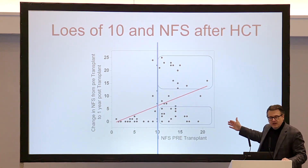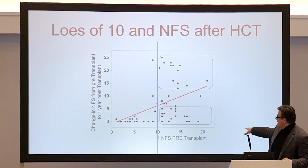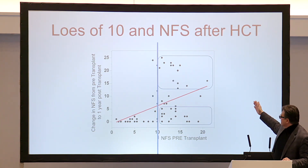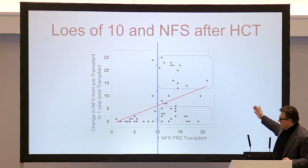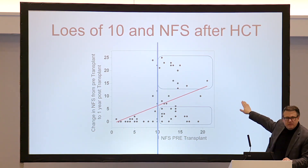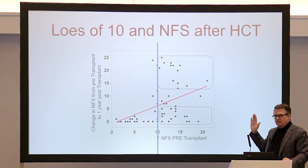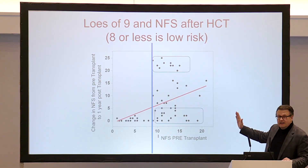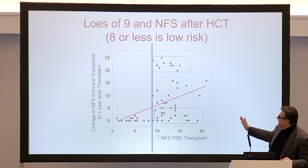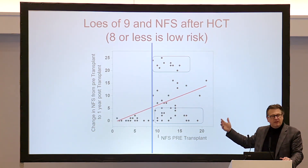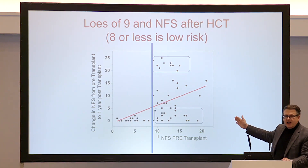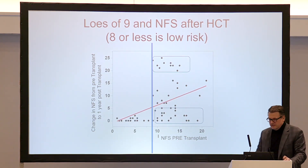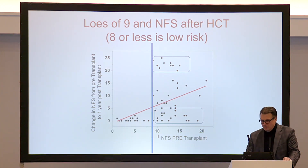This is the same graph again — the bottom axis should be MRI score, not NFS. Boys at a score of 10 and higher on the right have poor NFS outcomes after transplant, but we also see a couple of boys that didn't do well even at lower scores. If we move our high-risk definition down to 9 and higher, with 8 and lower as low risk, you see everybody at 8 and lower did fairly well with very low accumulation of symptoms, and everybody at 9 and higher is truly high risk. That might be a better way to define high risk.